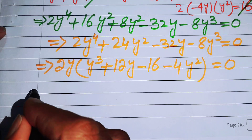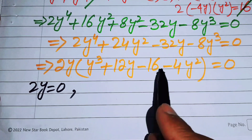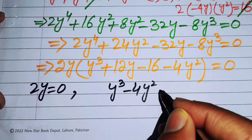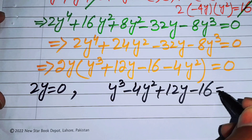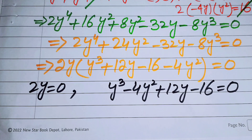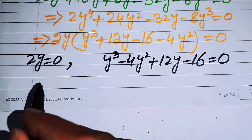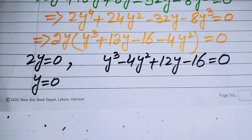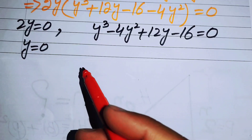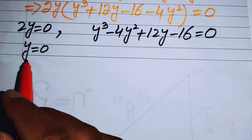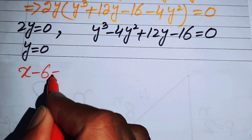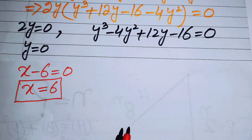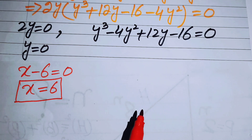Case 1: 2y = 0, so y = 0. Back-substituting y = x - 6, we get x - 6 = 0, which gives our first real root: x = 6.